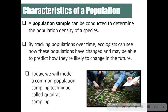A population sample can be conducted to determine the population density of a species. By tracking populations over time, ecologists can see how populations have changed and may be able to predict how they're likely to change in the future. Today we are going to model a common population sampling technique called quadrant sampling.